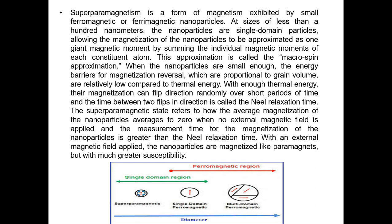Superparamagnetism is a form of magnetism exhibited by small ferromagnetic or ferrimagnetic nanoparticles, usually less than 100 nanometers in size, which are single-domain. All of this study uses the macrospin approximation. When nanoparticles are small enough, the energy barrier also reduces and the particle can easily change direction — with sufficient thermal energy the magnetization can flip direction randomly over short periods of time. The time between two flips in a given direction is called the Néel relaxation time.